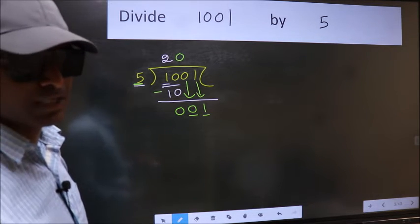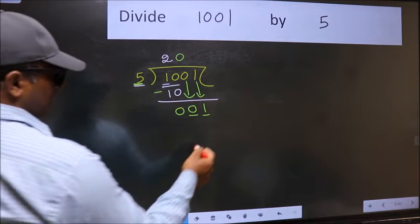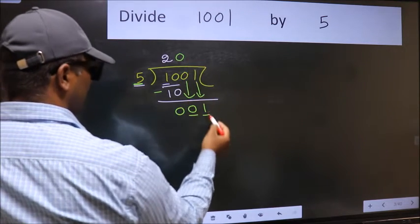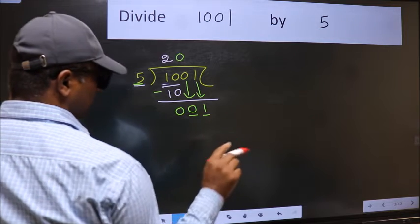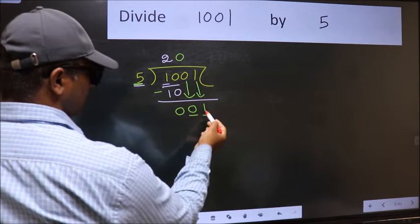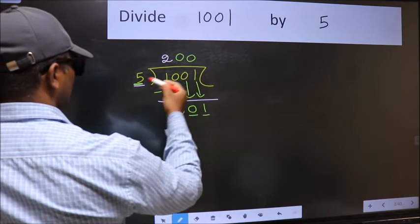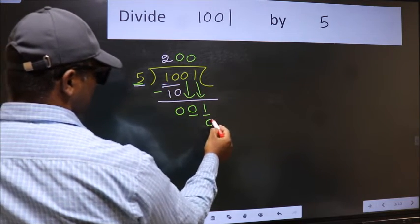Instead, what you should think of doing is which number should we take here? If I take 1, we will get 5. But 5 is larger than 1. So what we should do is we should take 0. So 5 into 0, 0.